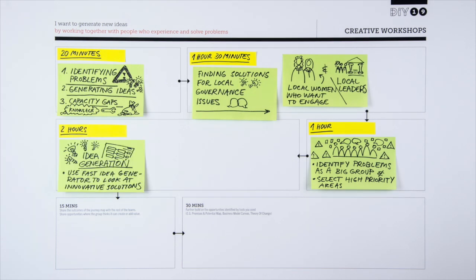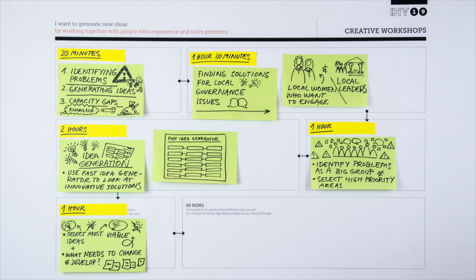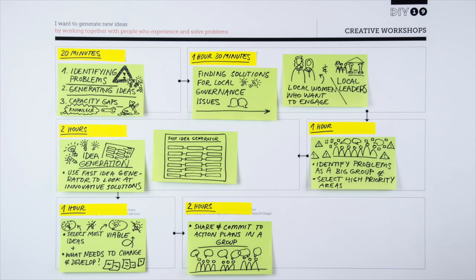Nata and Zana decide to use the fast idea generator tool as a technique to help the group find lots of ideas. They will select the most viable ideas and what they need to change or develop. The group will then come together to share and commit to action plans.